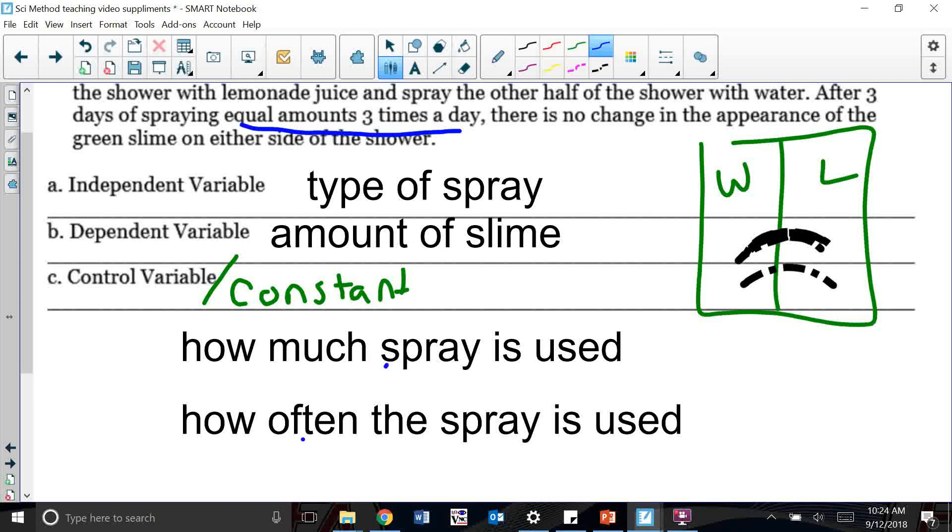Something that's not said in here is I want to make sure that if I scrub one side, I want to scrub the other. All those other variables need to be kept constant, so that way we're only changing which spray we're using.